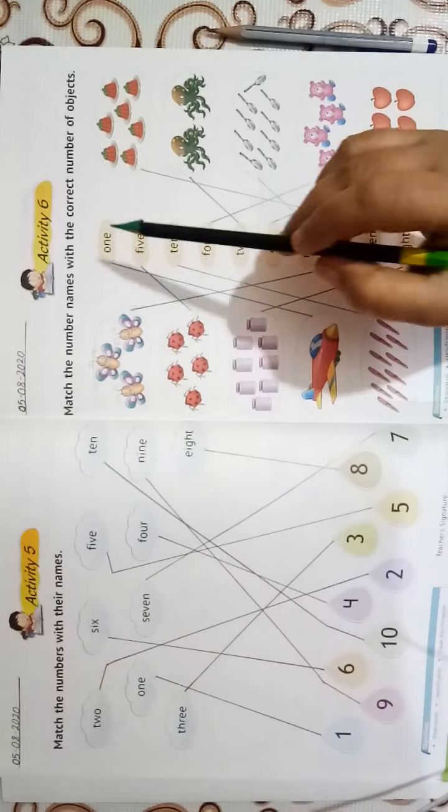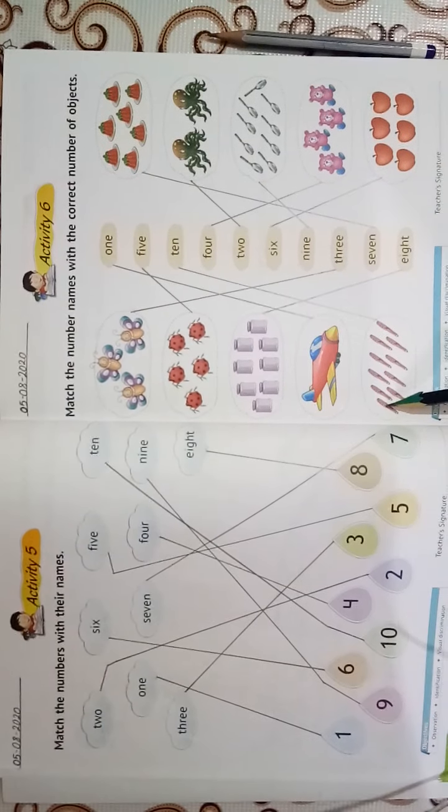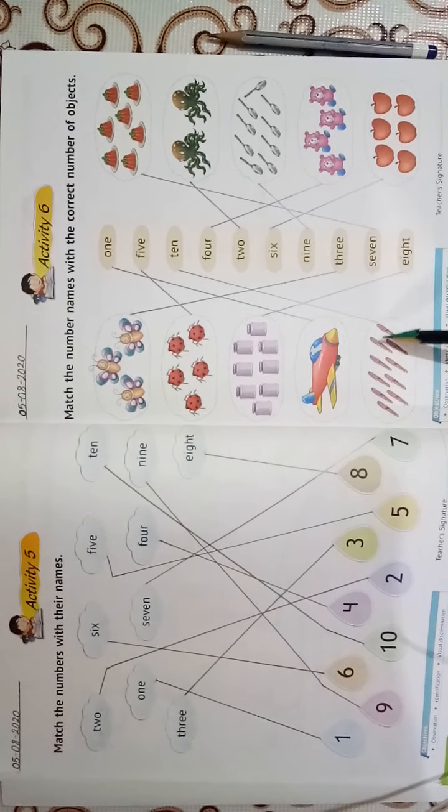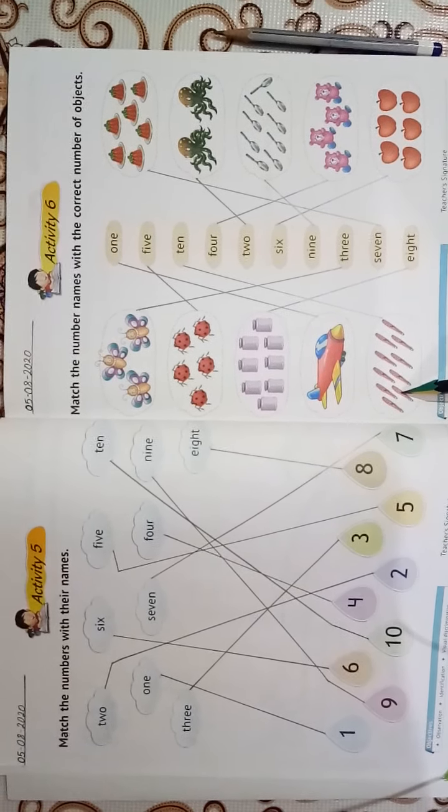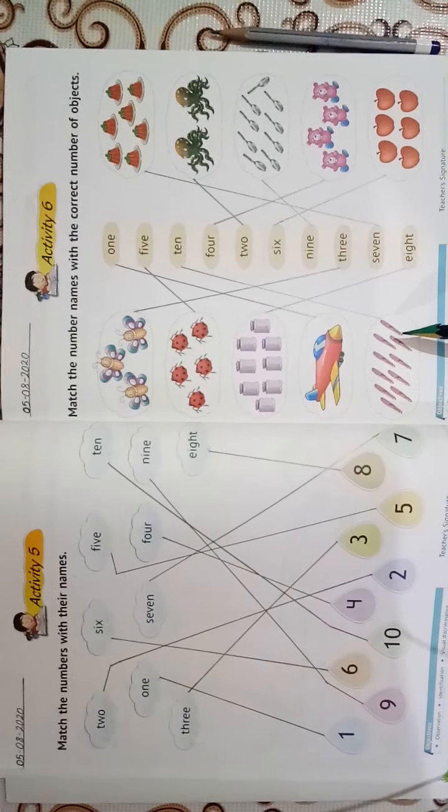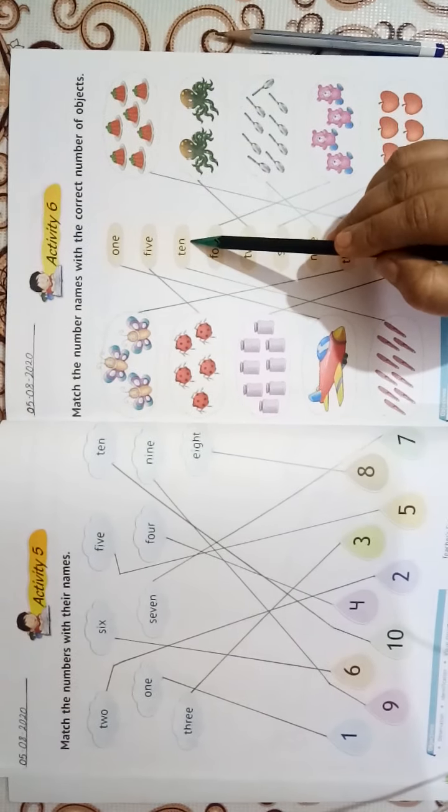One aeroplane, we will match with O-N-E 1. 1, 2, 3, 4, 5, 6, 7, 8, 9, 10. Ten pens, we will match with number name T-E-N 10.